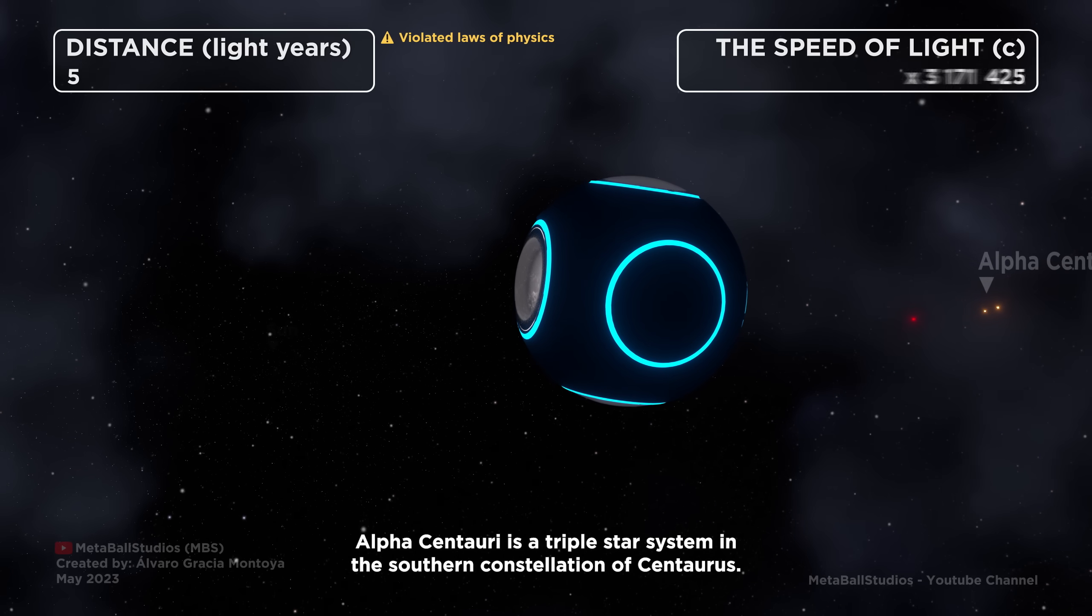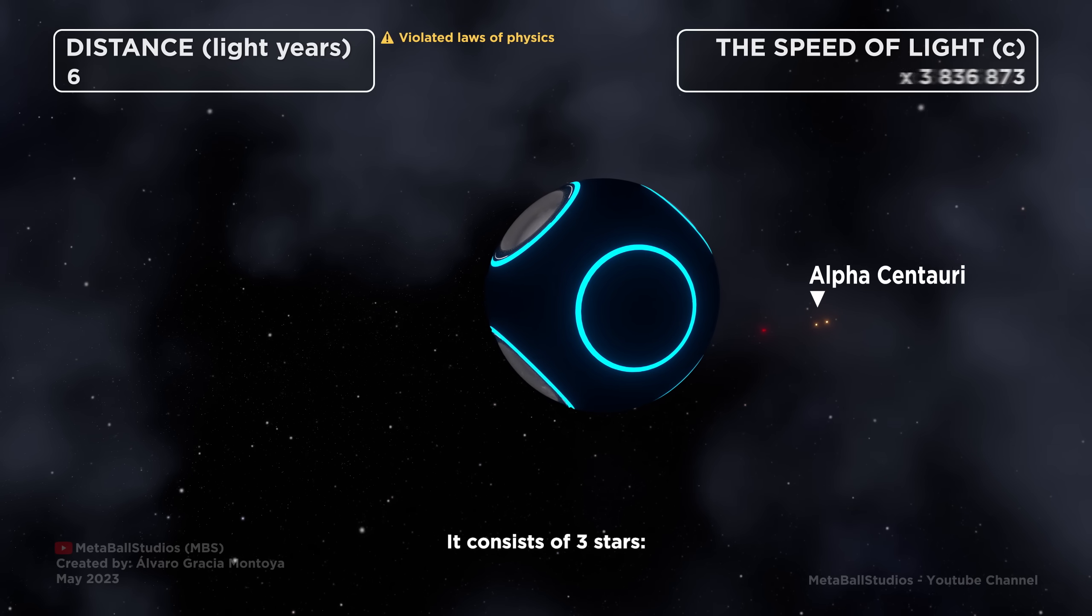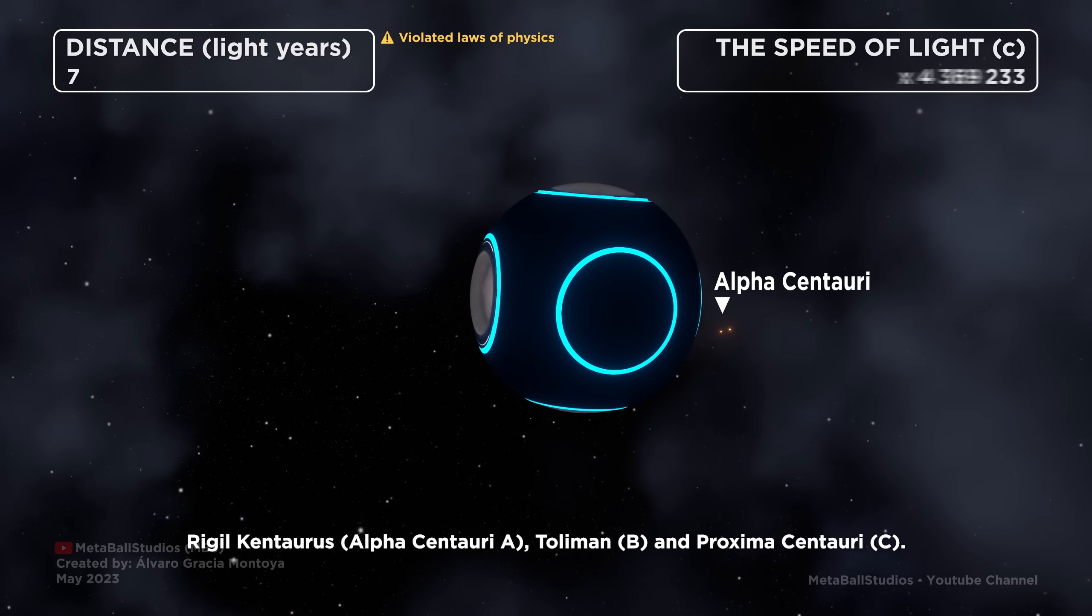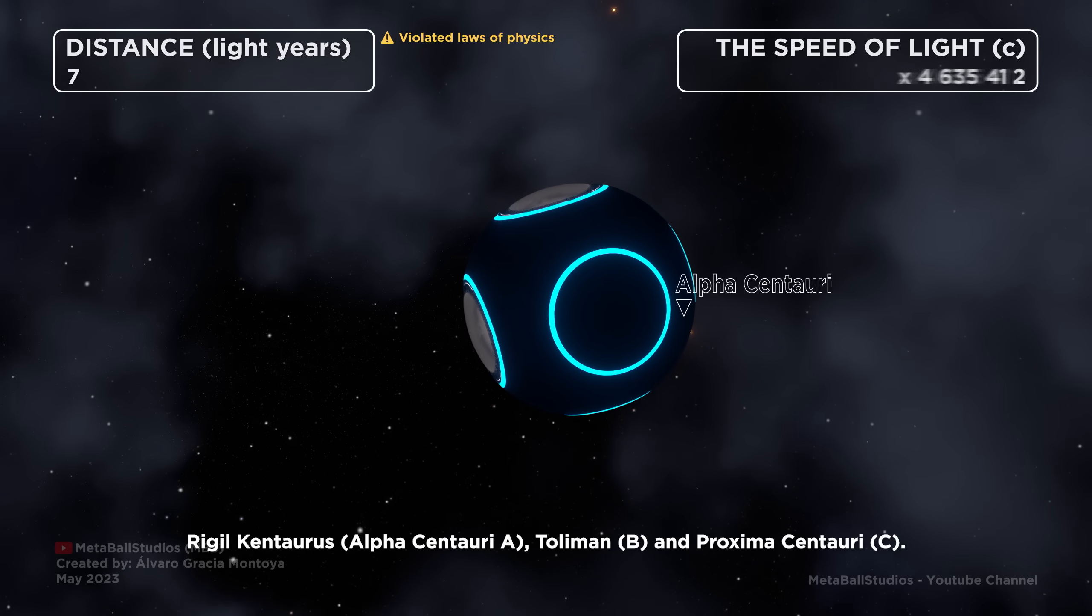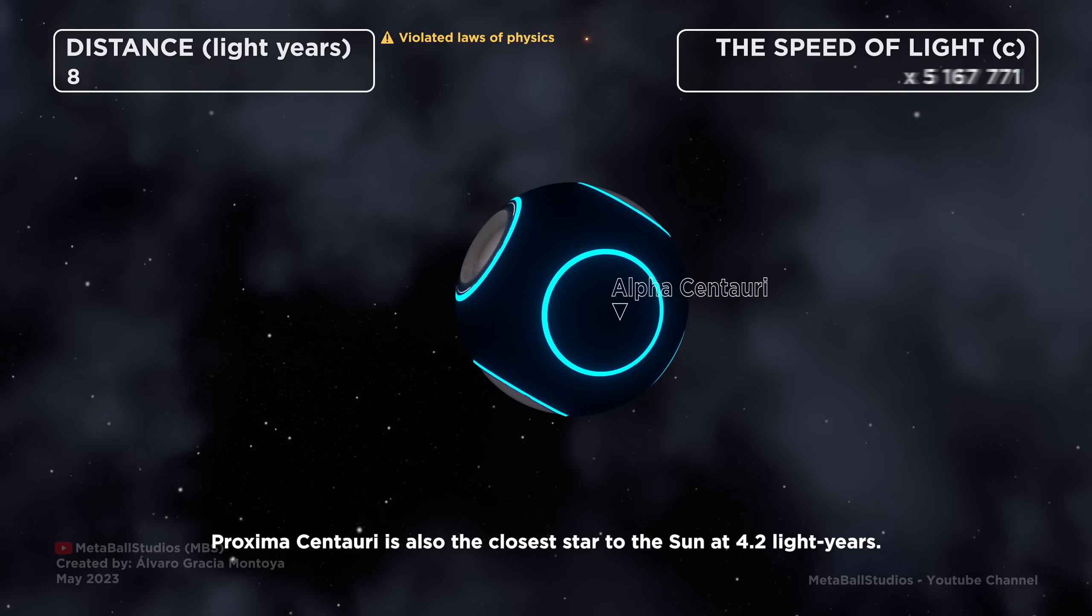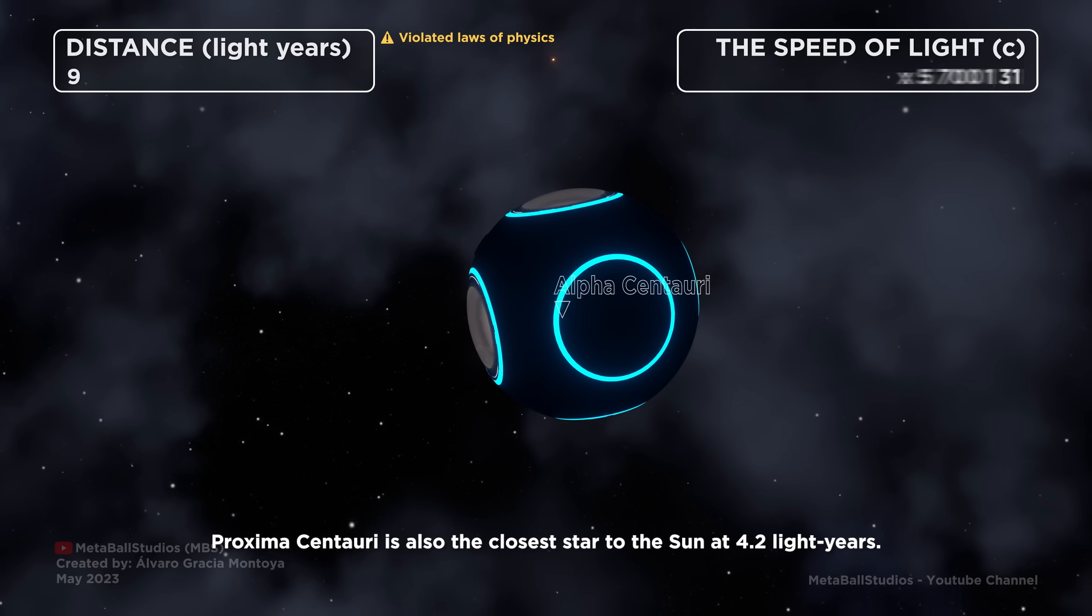Alpha Centauri is a triple star system in the southern constellation of Centaurus. It consists of three stars: Rigel Kentaurus, Alpha Centauri A, Toliman B, and Proxima Centauri C. Proxima Centauri is also the closest star to the Sun at 4.2 light years.